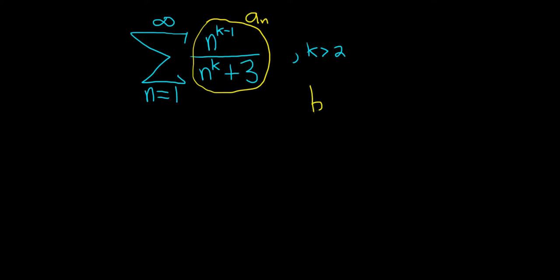So to find b sub n in a problem like this, where you have a polynomial over a polynomial, just look at the leading terms. So this will be n to the k minus one over, and then just ignore the three n to the k, just the terms of highest degree. So here the degree is k, here the degree is k minus one.